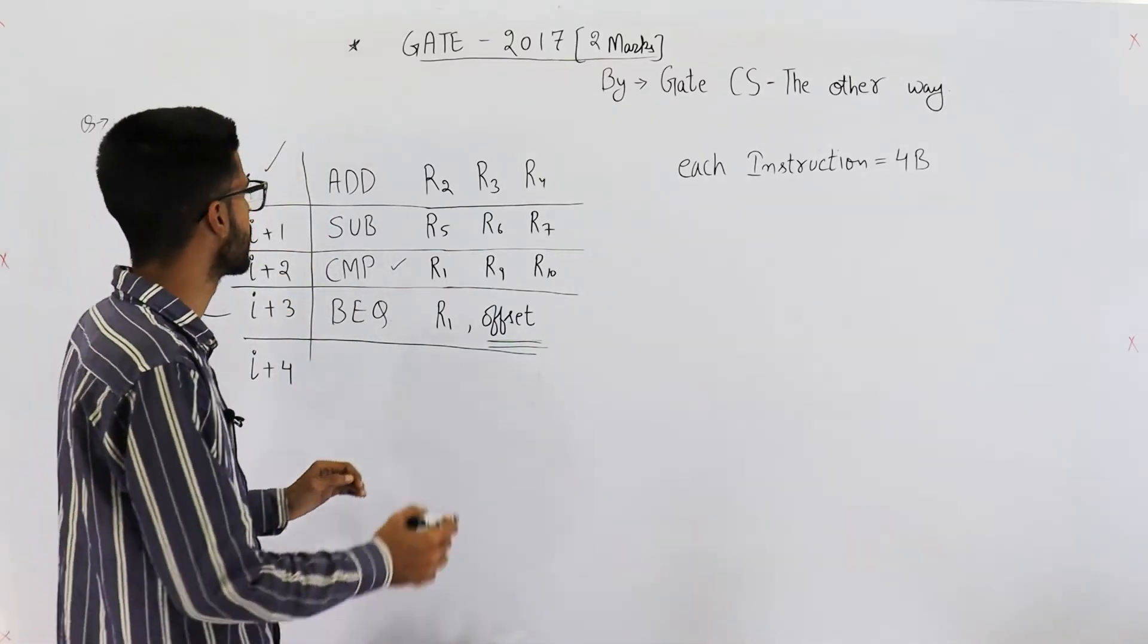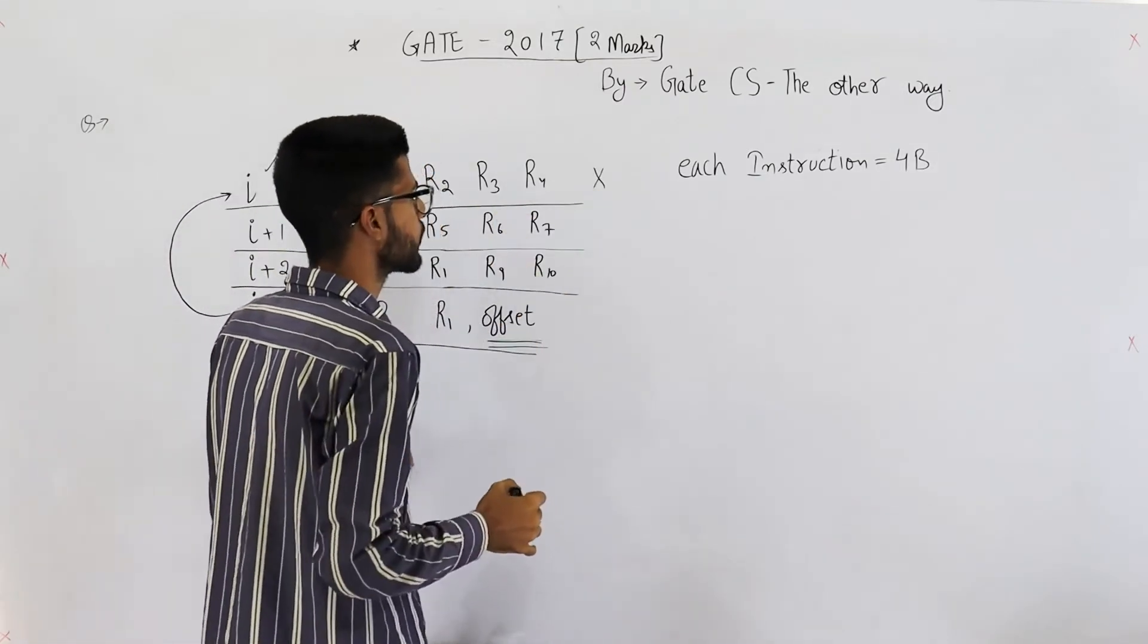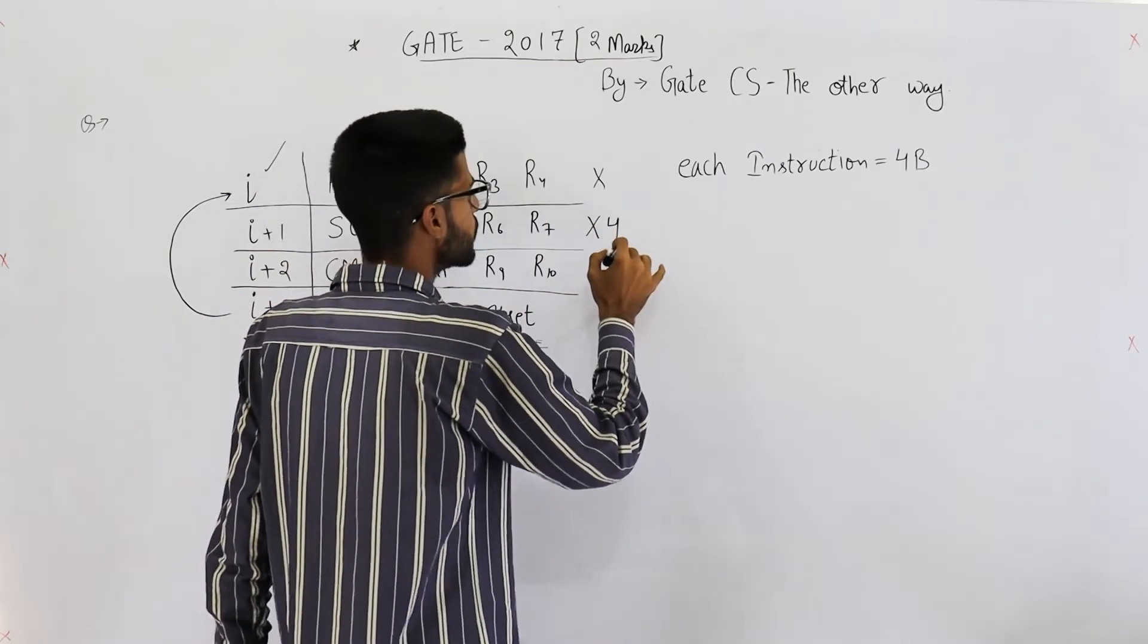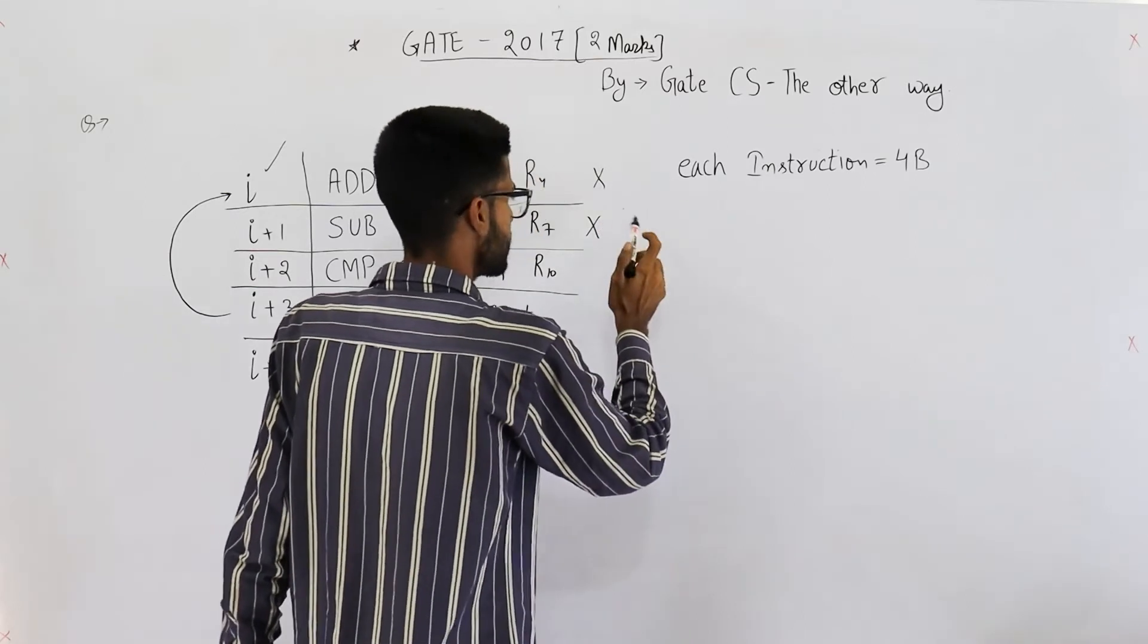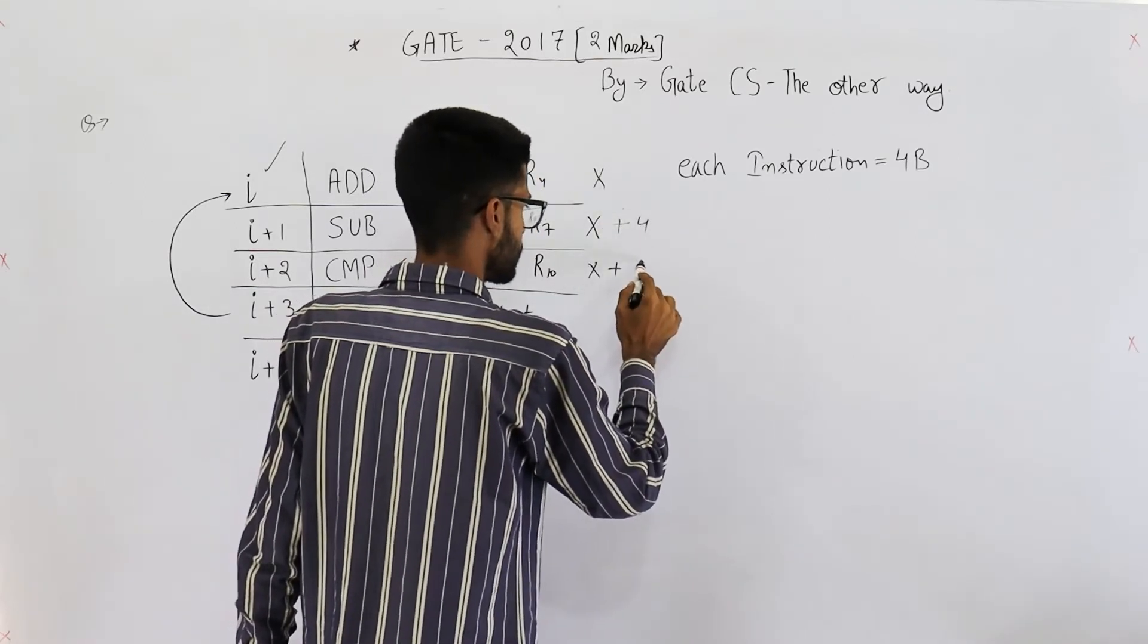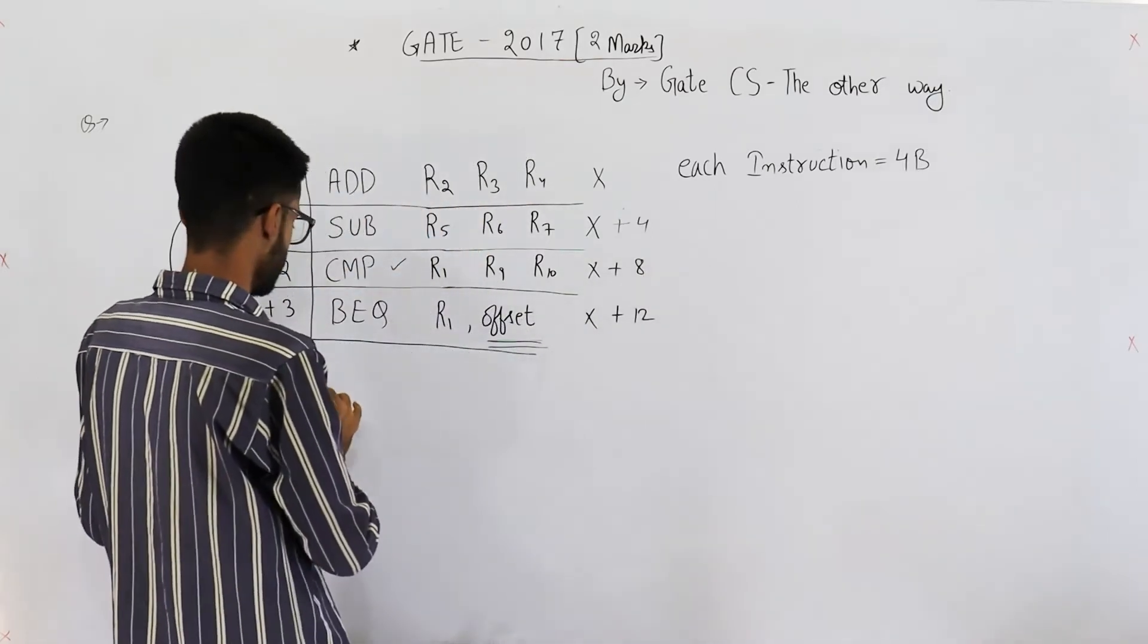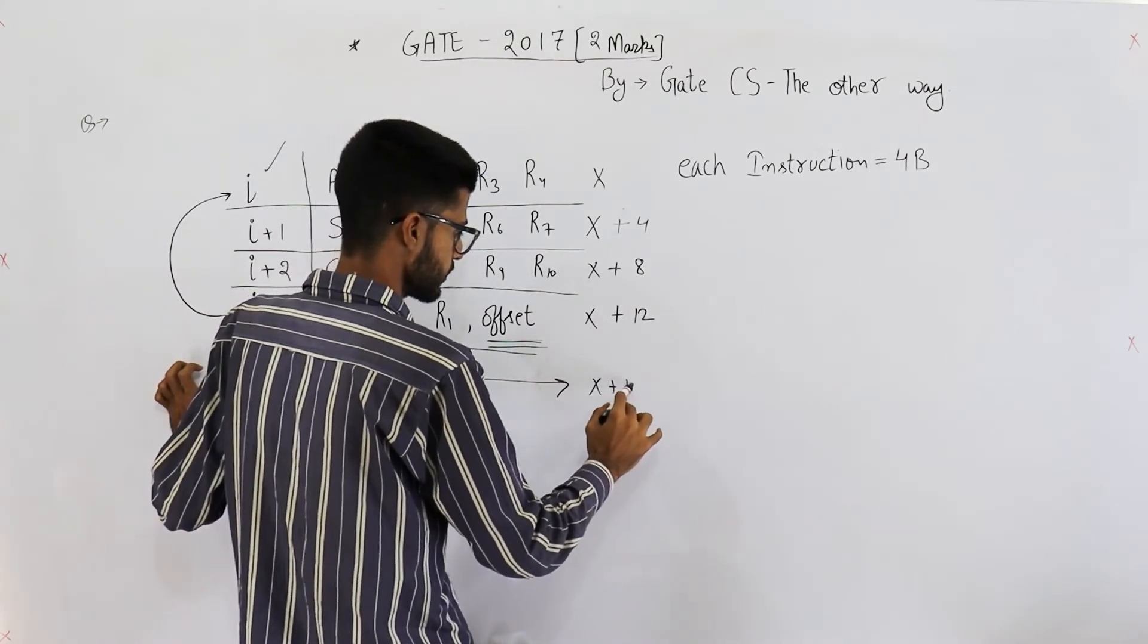First, if this instruction's address is x, then this one's address will be x+4 because each instruction is 4 bytes, as given in the question. This one will be x+8, then x+12, and this instruction is going to be x+16.